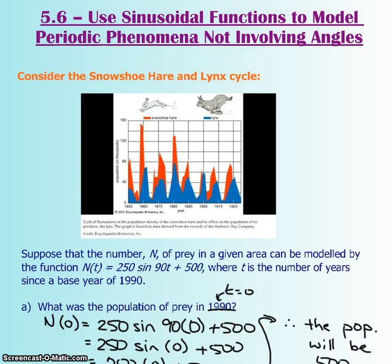Sections 5.5 and 5.6 are pretty much the same. You're still applying trig functions to real life situations. The only difference is in 5.6, they decide to tell you that the independent variable will not be dealing with degrees anymore. So you're not involving angles, you're now dealing with something else like time.